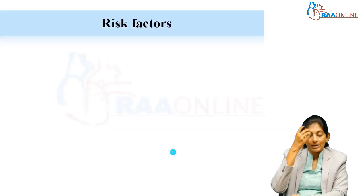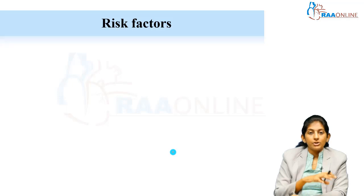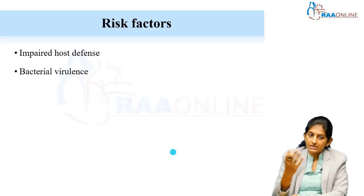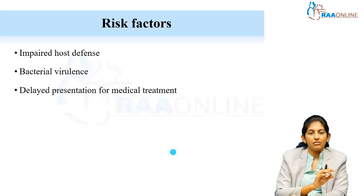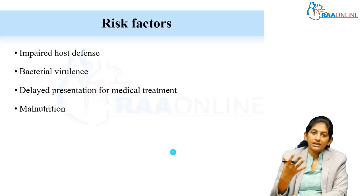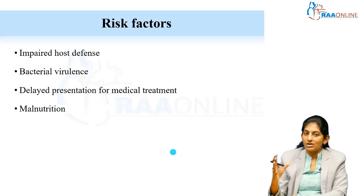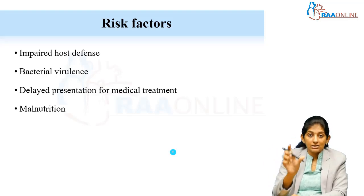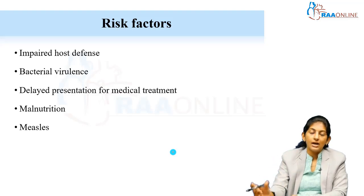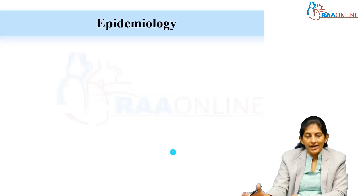Risk factors include pneumonia caused by virulent organisms, impaired host defense, or delayed medical treatment. Host-related risk factors include malnourished children, children who have not received immunizations for pneumococcal or Hib, and immunocompromised states such as post-measles. These children are more likely to progress to complicated parapneumonic effusions. Infection with antibiotic-resistant organisms is also a significant risk factor.